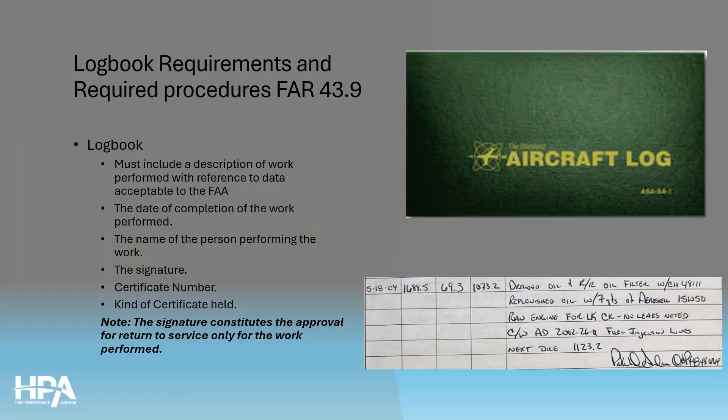When you do preventive maintenance, you're going to want to make a logbook entry. According to FAR 43.9, that logbook entry must include a description of the work performed with reference to data acceptable to the FAA, the date of completion of the work performed, the name of the person performing the work, the signature, certificate number, and the kind of certificate held. Note that the signature constitutes the approval for return to service only for the work performed.